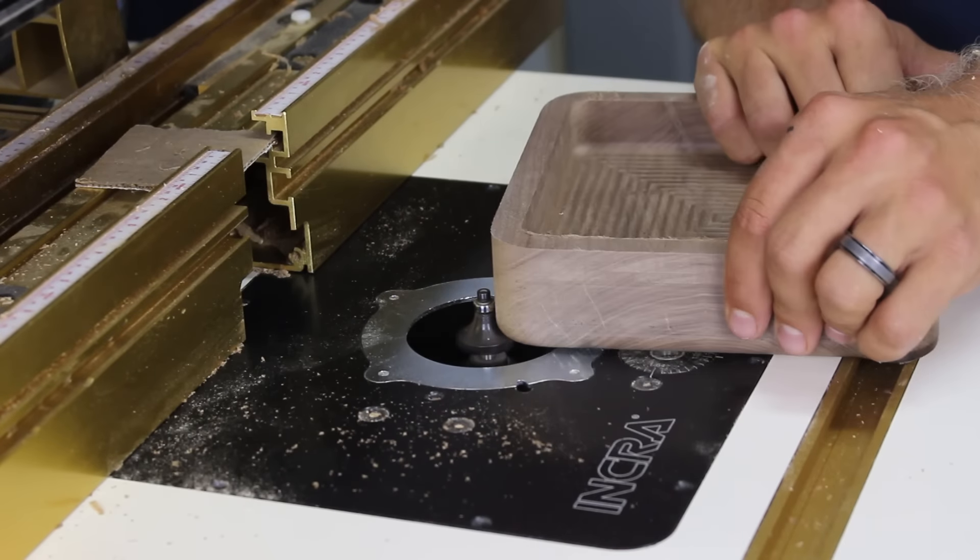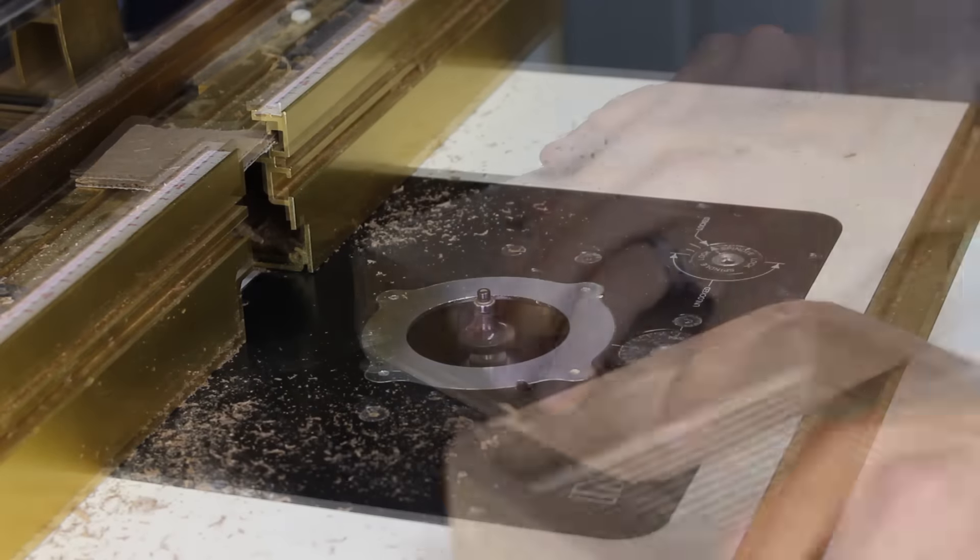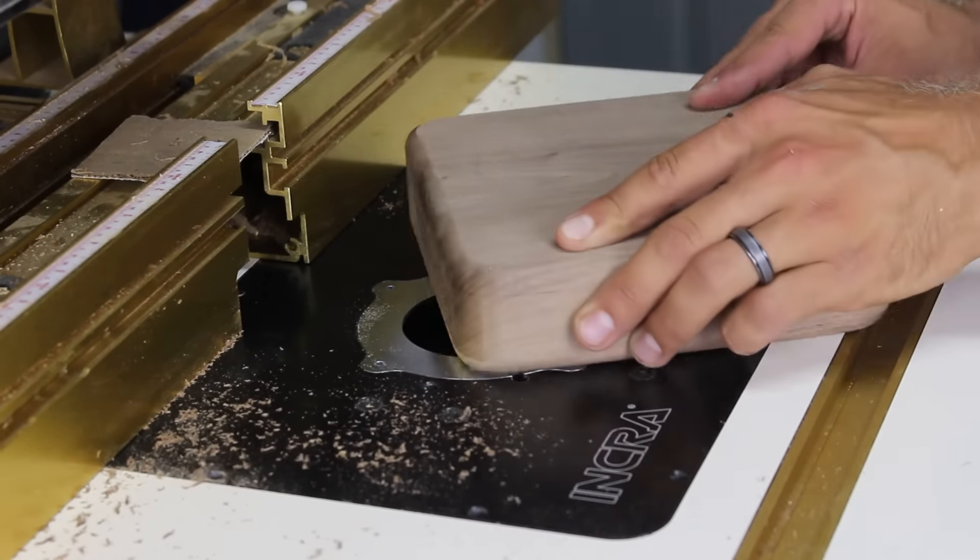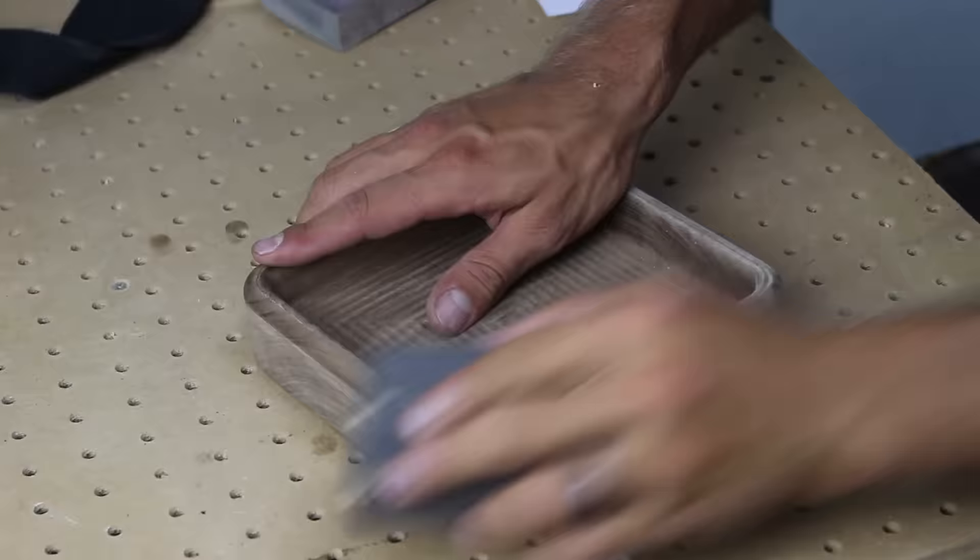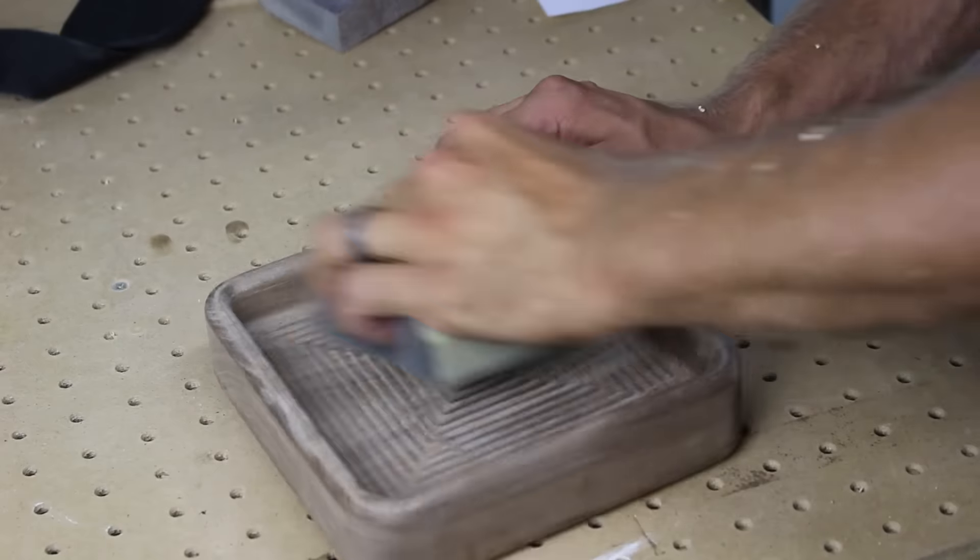I then used a round over bit to give the tray a nice soft look and feel. I sanded the entire project with a few sanding sponges. I should mention that the bowl bit leaves grooves in the bottom of the tray. You could use a flat bit to clean these up but I elected to leave them as I thought they looked cool.